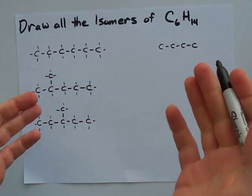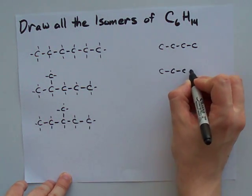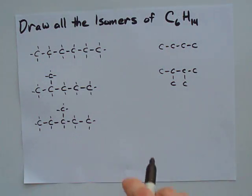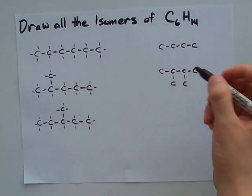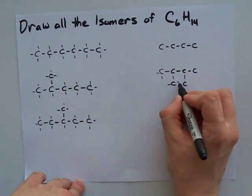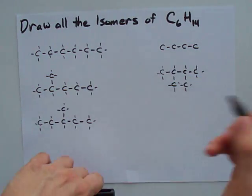Well, the first way that I can see is to attach one here and one here. The longest chain here is still 4 long, but I have 2 methyl groups sticking out of it. Counting: 1, 2, 3, 4, 5, 6, 7, 8, 9, 10, 11, 12, 13, 14. Beautiful.